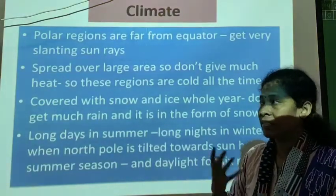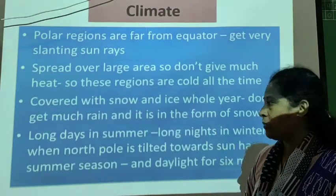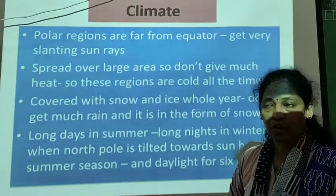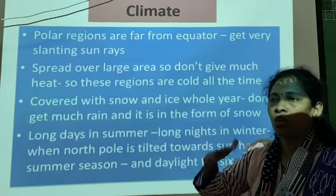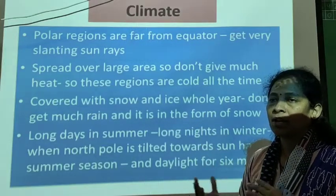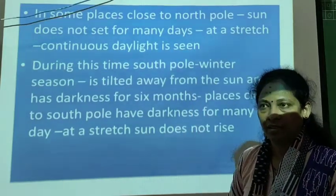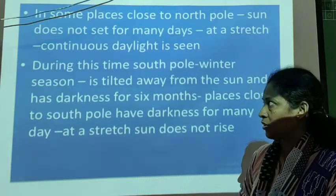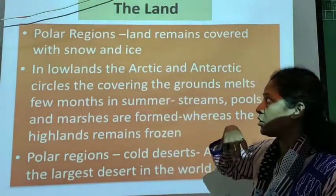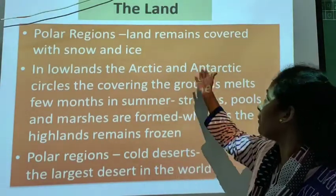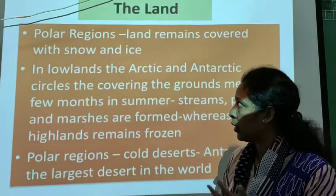I explained what type of climate is found in polar regions. Longer days occur in summer and longer nights in winter. When it is winter in the northern hemisphere, the southern hemisphere experiences winter season with longer nights. Most of the polar regions will be covered with snow and ice.